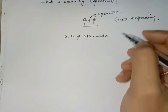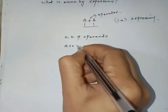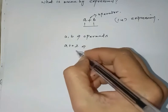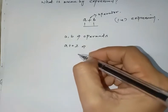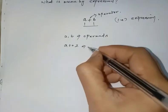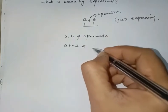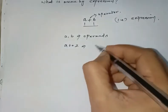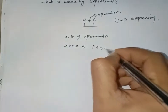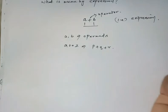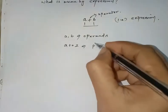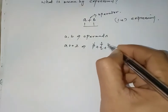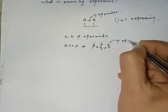Operands are letters from A to Z. For example, P plus Q plus R — each of P, Q, and R is an operand.